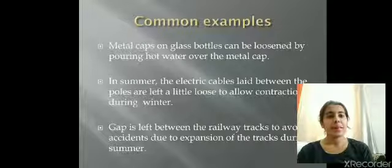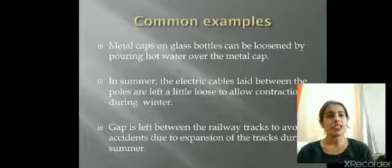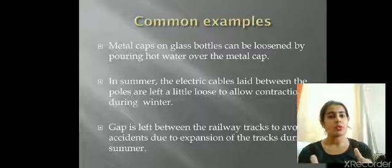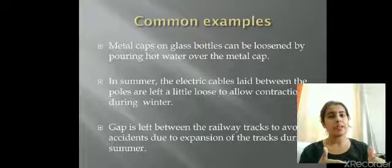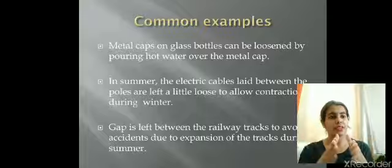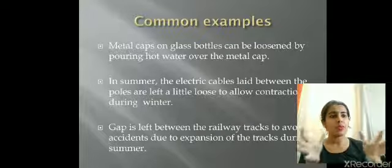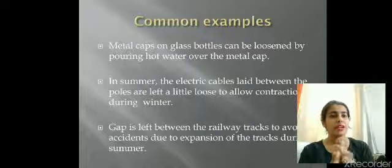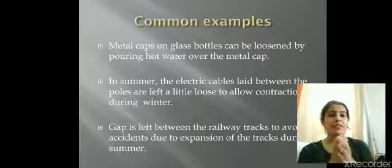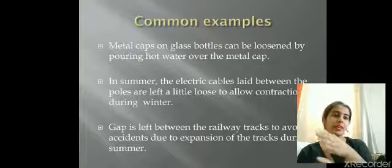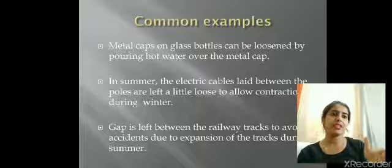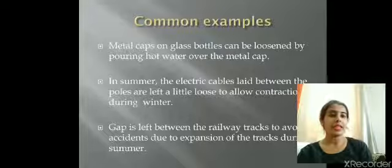Second example is in summers when the electrical cables are laid between the poles, they are left a little loose. Why? Because when winters are coming, during the winters, these cables are going to contract. So they are going to pull their molecules together. They are going to shrink. Otherwise, if they don't leave a little loose during the summers, it will lead to breakage of the cables.